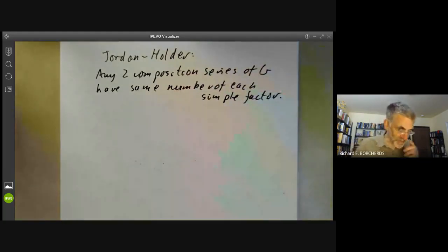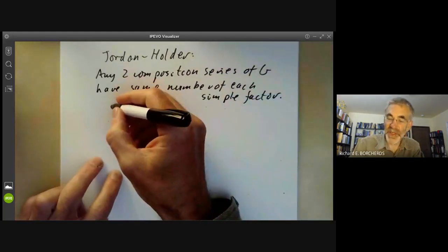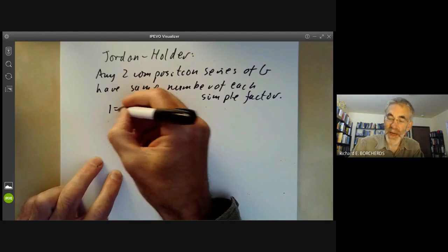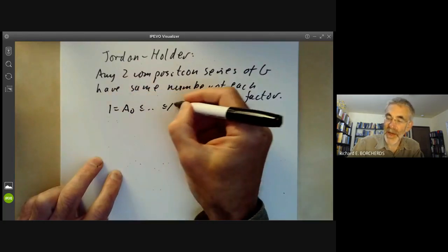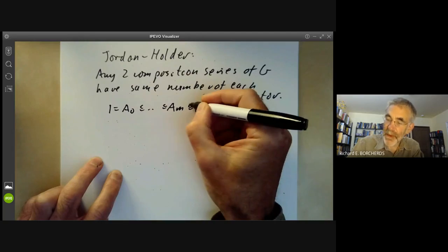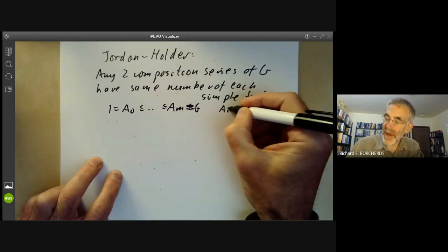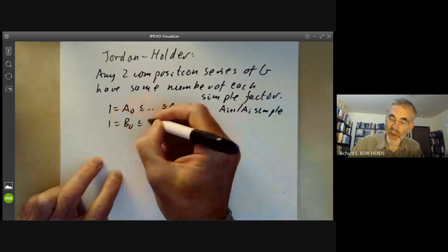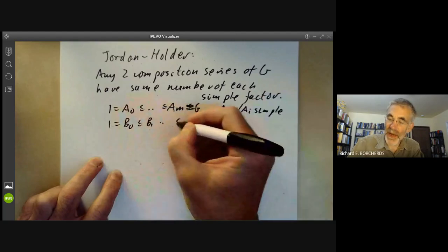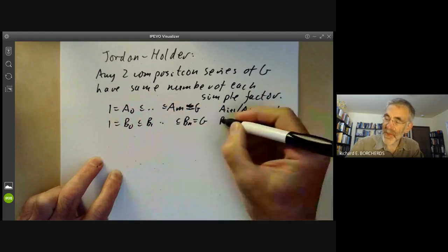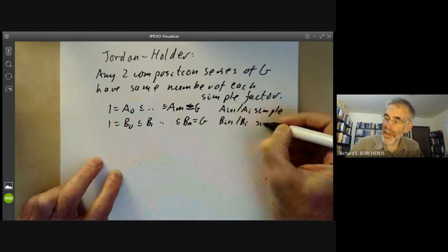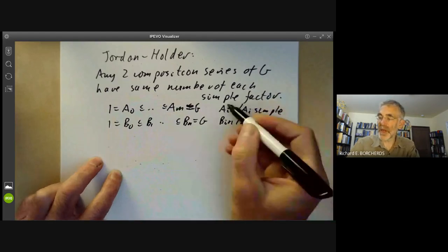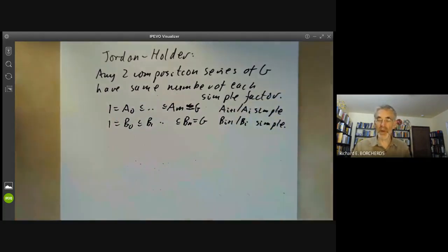And we're going to prove this theorem by driving a taxi cab around in a rectangular array. So the idea is as follows. Suppose you've got two composition series. So one is equal to A0 contains an AM, contains an G equals G with AI plus 1 over AI simple. And we take 1 is equal to B0 contained in B1 contained in BN equals G with each of the BI plus 1 over BI simple. And we want to show that these quotients are the same as these quotients, possibly in a different order.